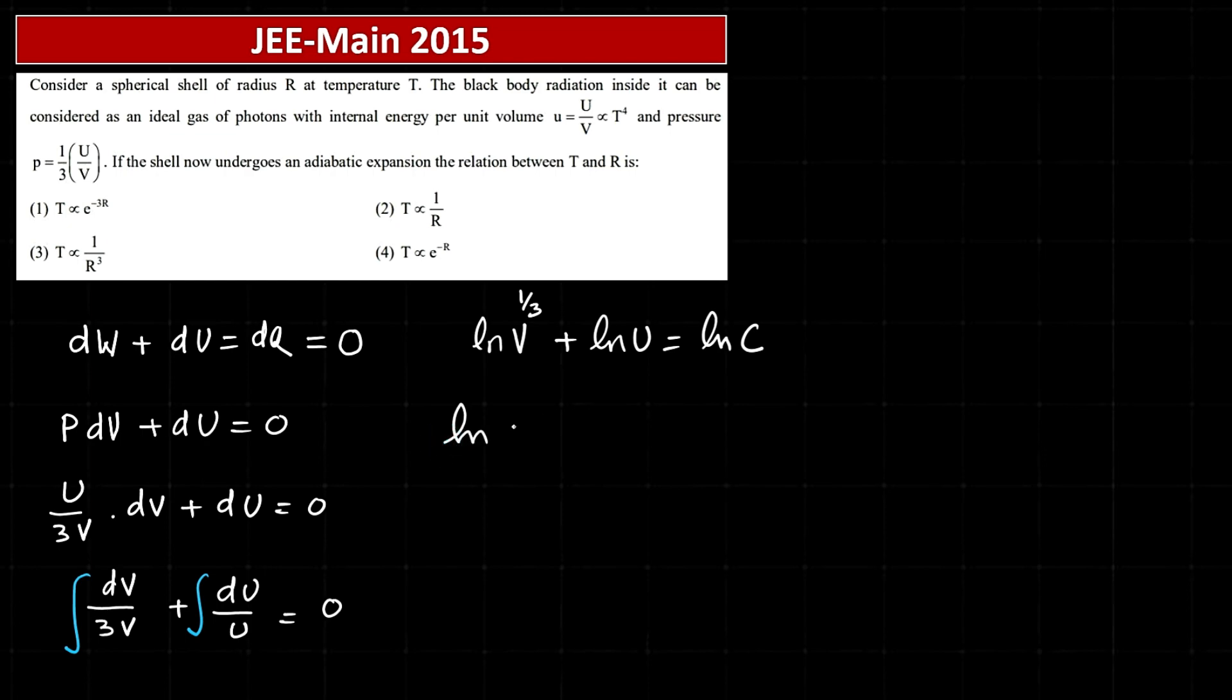So that will become ln V to the power 1 by 3 times U equals ln C, so V to the power 1 by 3 times U equals C.